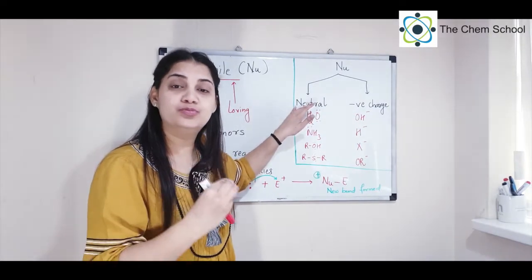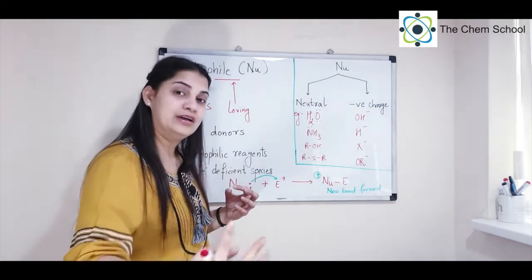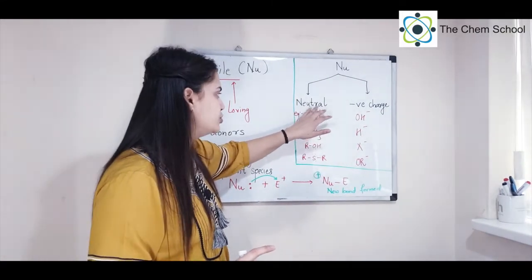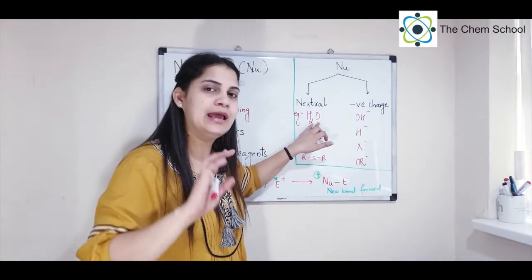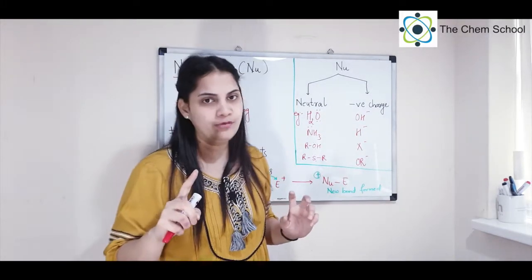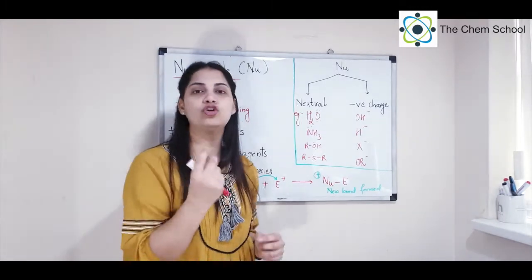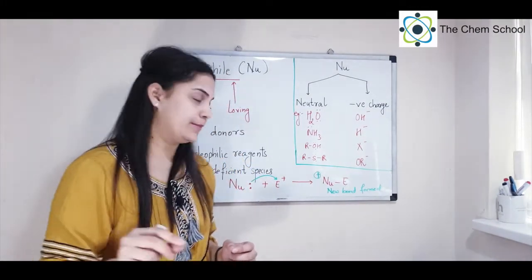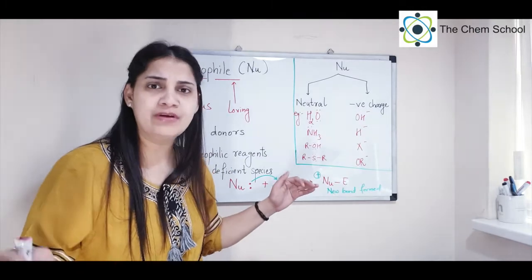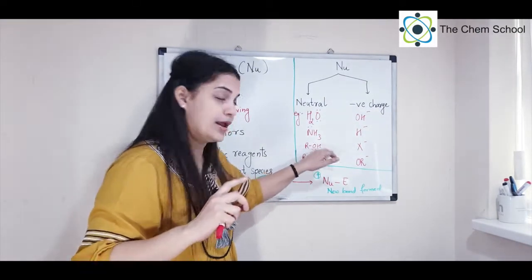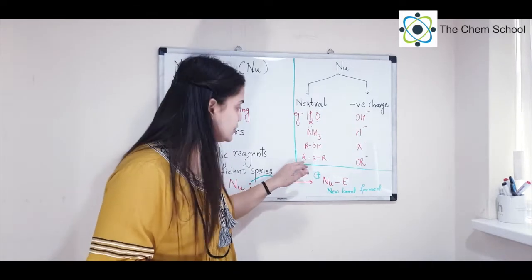Neutral nucleophiles are species having an excess of lone pairs that they can donate when needed. For example, water has oxygen with two lone pairs and will donate one pair. Ammonia and amines — primary, secondary, or tertiary — have nitrogen with lone pairs to donate. Similarly, alcohols and ethers also have oxygen and can donate one pair of electrons.